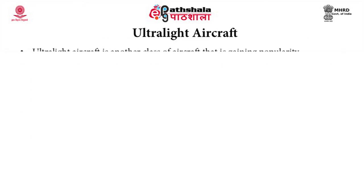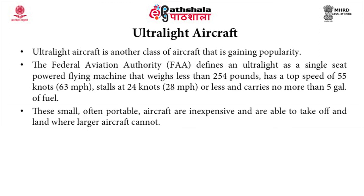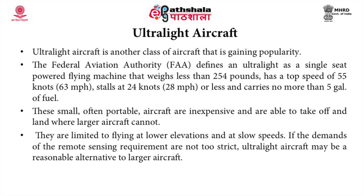Ultralight aircraft is another class gaining popularity. The Federal Aviation Authority defines an ultralight as a single-seat powered flying machine weighing less than 254 pounds, with a top speed of 55 knots, stalling at 24 knots or less, and carrying no more than 5 gallons of fuel. These small, often portable aircraft are inexpensive and can take off and land where larger aircraft cannot, but are limited to lower elevations and slow speeds. If the demands of the remote sensing requirement are not too strict, ultralight aircraft may be a reasonable alternative.